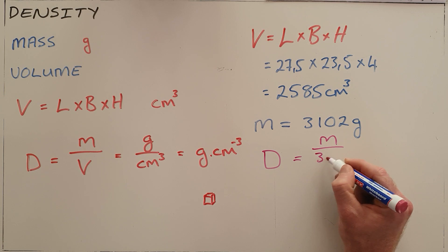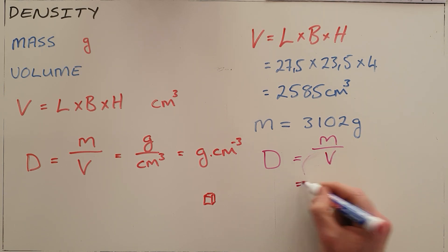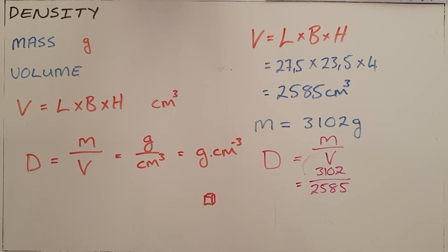We know that the mass is 3102 grams and the volume is 2585 cubic centimeters, which means that the density of this book is 1.2 grams per cubic centimeter.